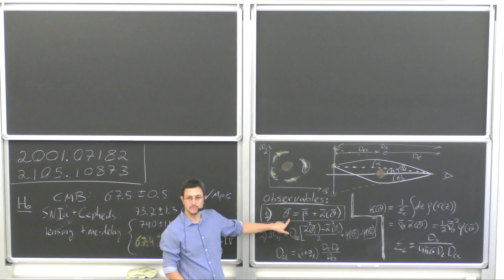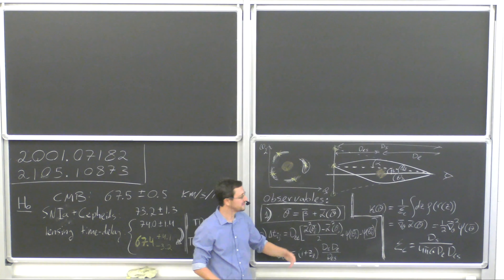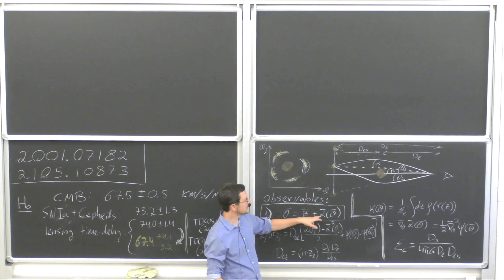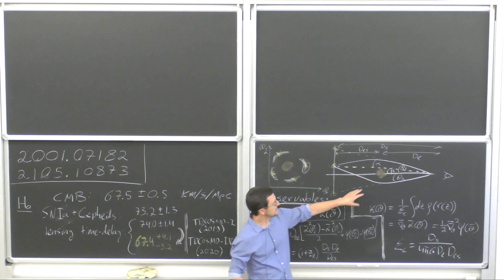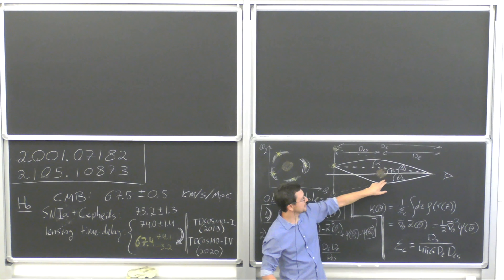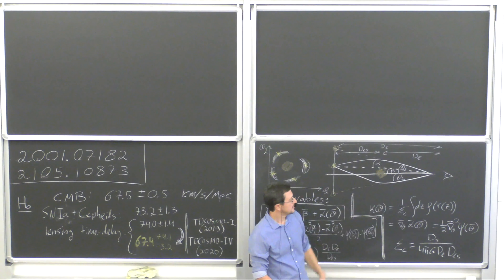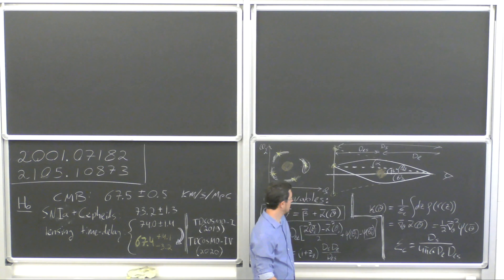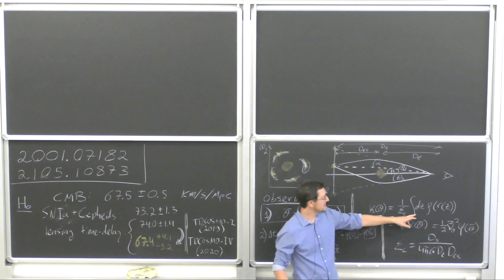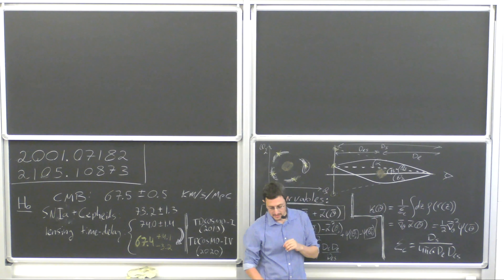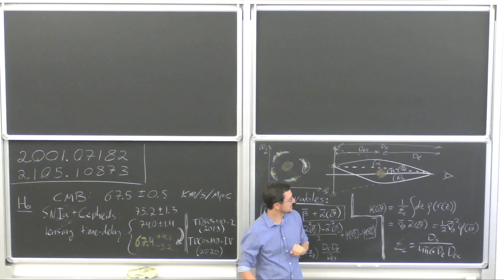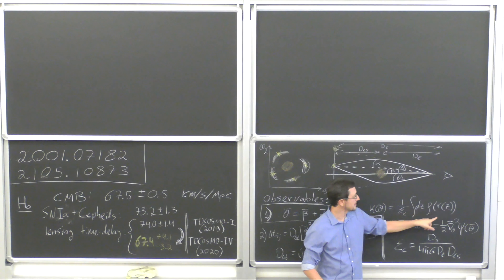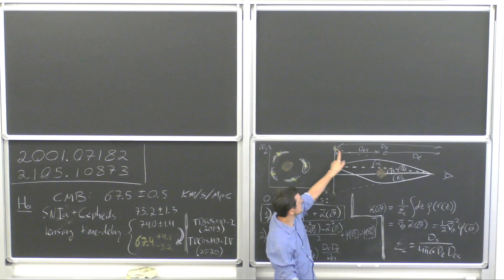The lensing reconstruction problem amounts to finding the solution for the deflection field alpha and the assumed source position beta to reconstruct the pixel map. What they need to do in practice is assume or model the density profile of the lens — the total matter density. The relevant parameter is the column depth of the mass along the line of sight: a line-of-sight integral of the density field along some angle theta.